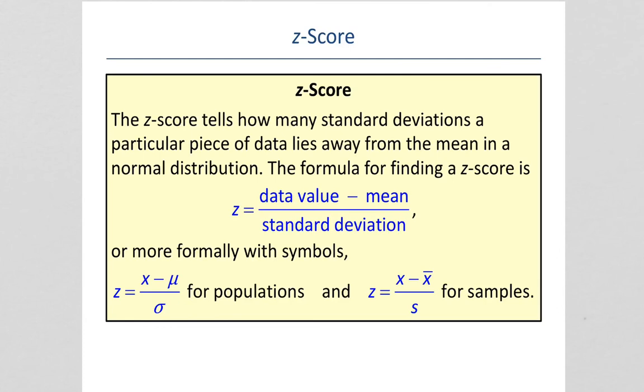Unfortunately, data isn't always going to fall exactly one, two, or three standard deviations from the mean. It might be somewhere in between. So, we have to use something called the z-score.